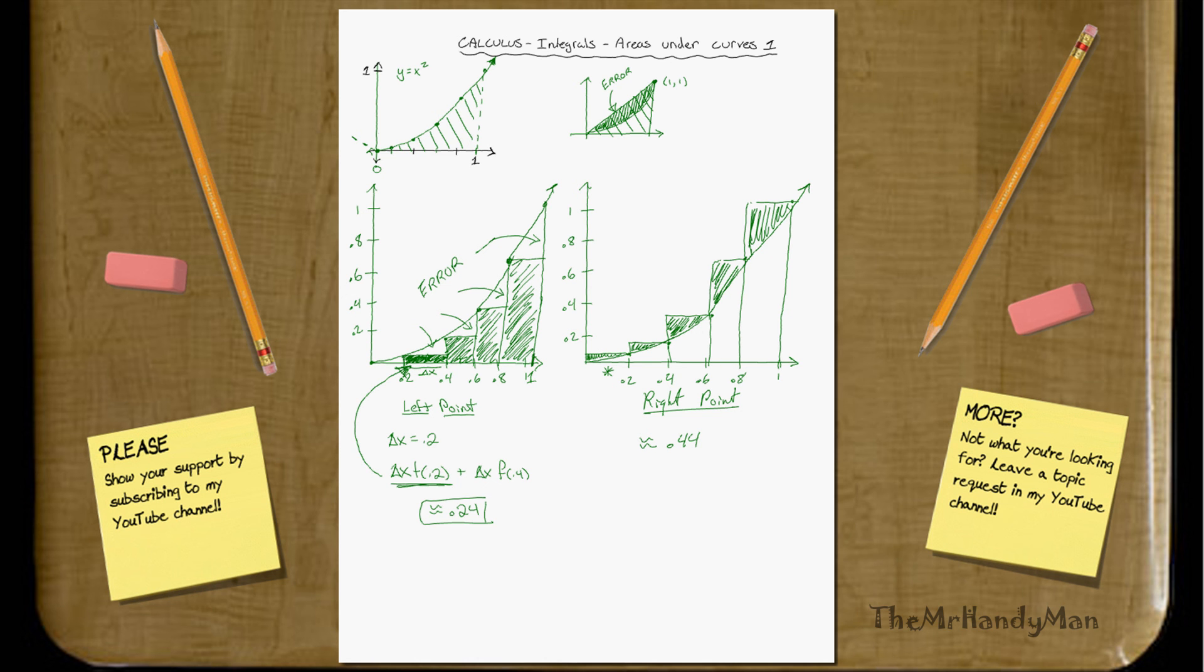And so, this kind of just sets us up for realizing that we need a more accurate way of doing it. And one technique will be discussed in actually the next video. But our area, I'll just say it this way. Our area is less than point four four, but greater than point two four. And I'll see you in the next video.